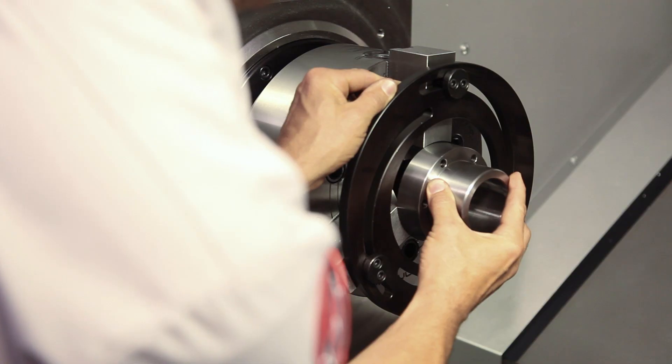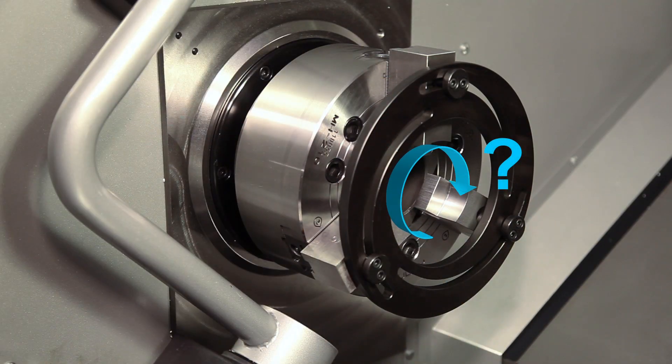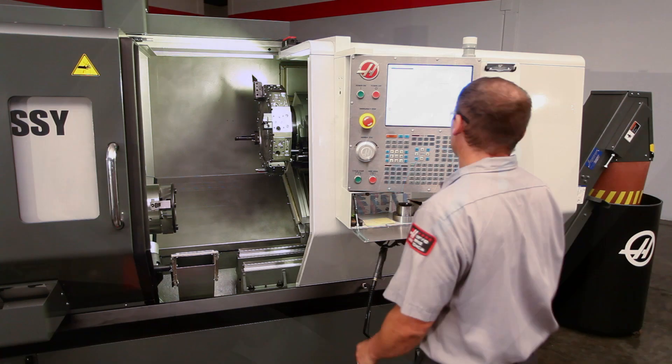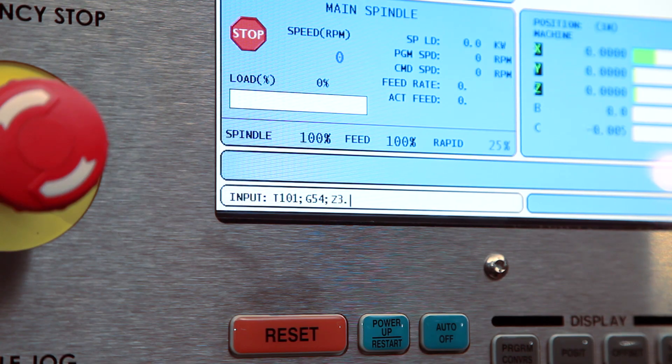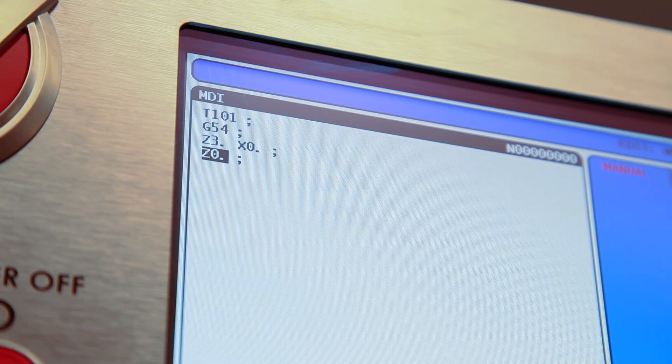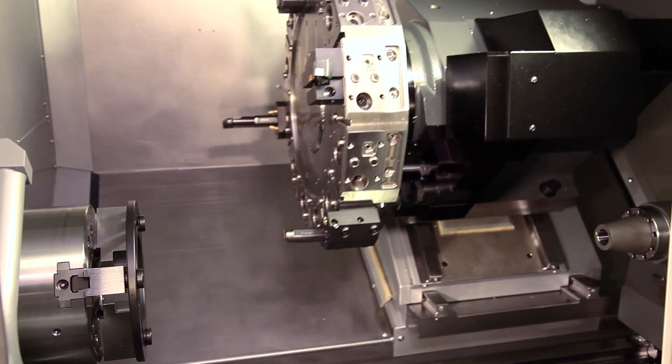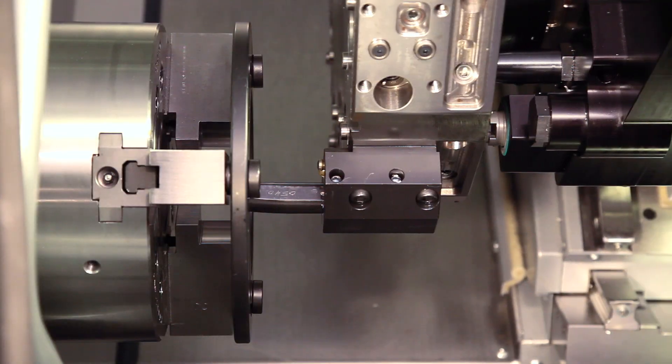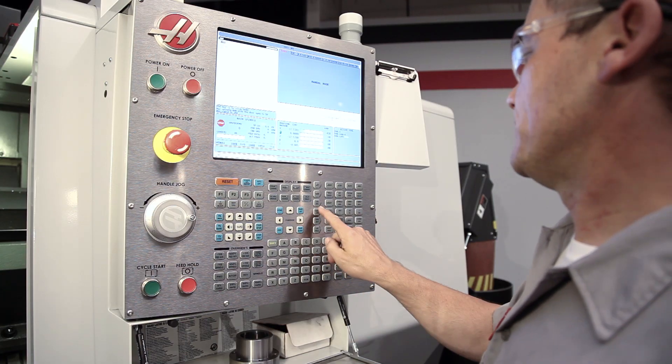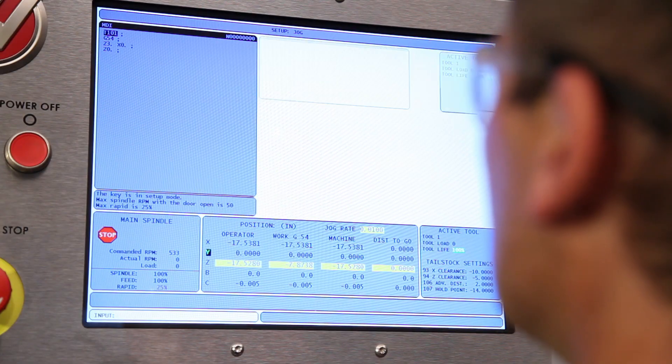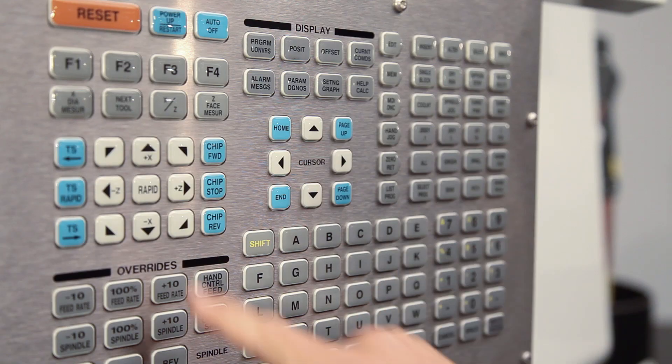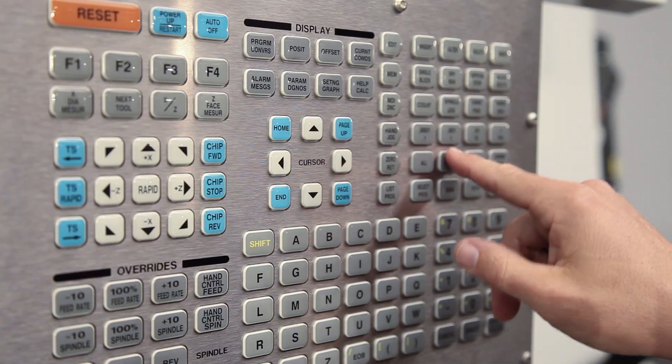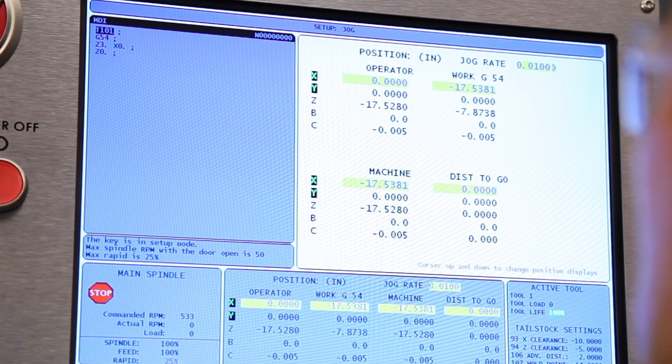We want to check what diameter the jaws are actually positioned at. To do this, we program a simple move going to X0 with the tool and offset we'll be using to recut the jaws. Press hand jog, press current commands, and press page up until you reach the position page. With X axis selected, press origin to zero out the operator position field.